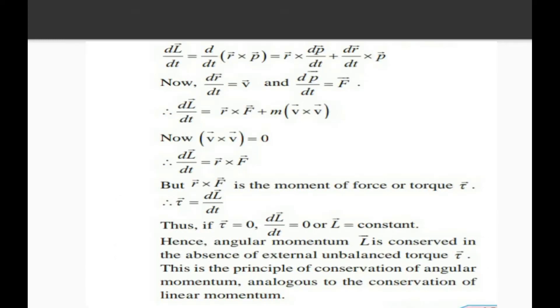Differentiating with respect to time, we get dL/dt = d/dt(R × P) = dR/dt × P + R × dP/dt. Now, dR/dt = V and dP/dt = F. Therefore, dL/dt = V × P + R × F. Now V × V = 0, so dL/dt = R × F.